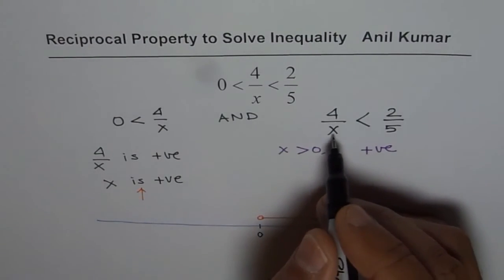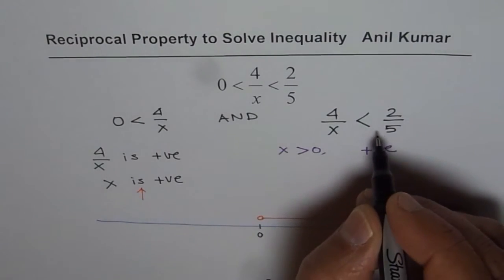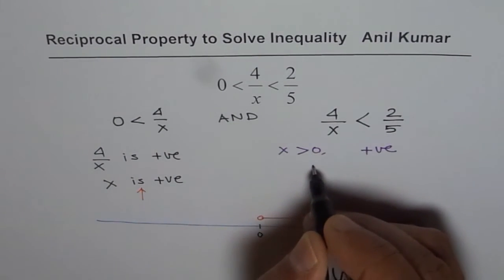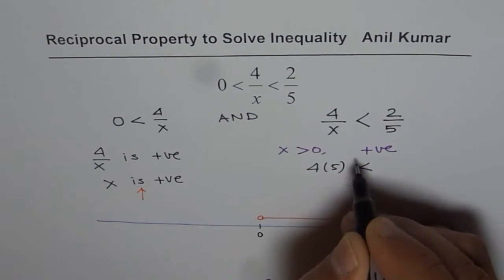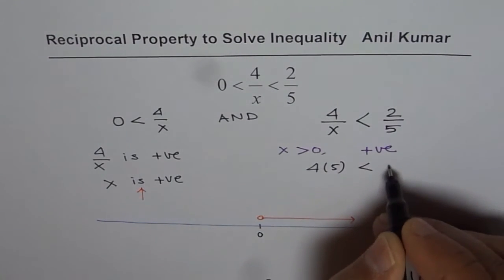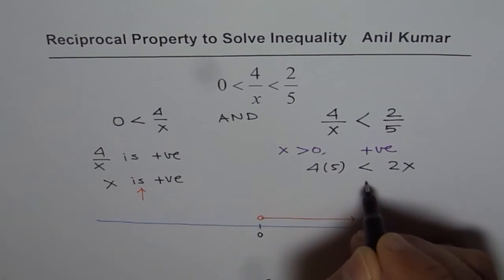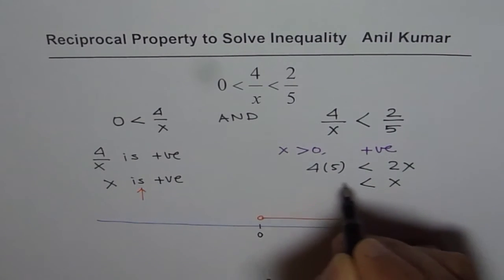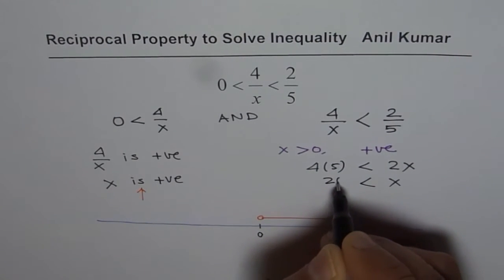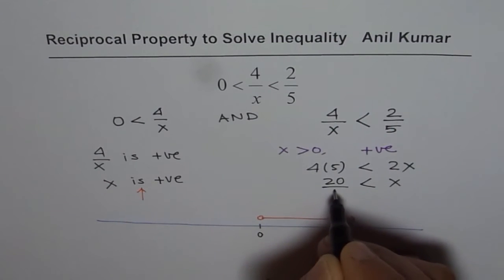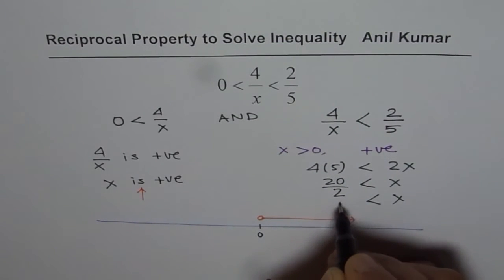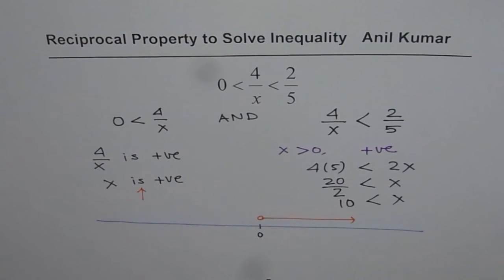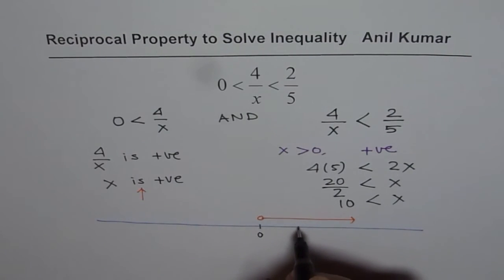So what should we do? We will just cross multiply. We get 4 times 5 is less than 2x. To get the value of x, we compute 4 times 5 equals 20 and then divide by 2. So we get x is greater than 10.